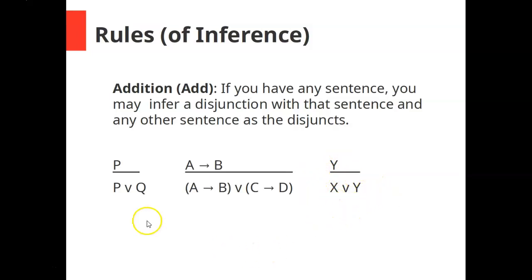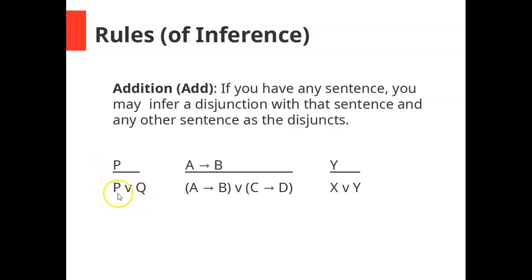It doesn't matter what order you put them in. This might seem like cheating — like you're just making something up — and you kind of are, but you're not cheating. This is a valid rule of inference. If P is true, then any disjunction in which P is one of the disjuncts must also be true: P or Q, P or X, P or (if X then Y). The reason is that for a disjunction to be true, at least one of the disjuncts has to be true. So if P is true, then P or anything else also has to be true. That's the rule of addition.